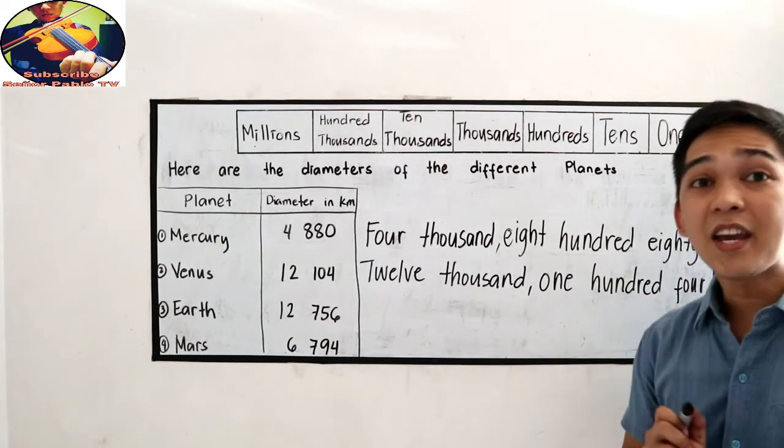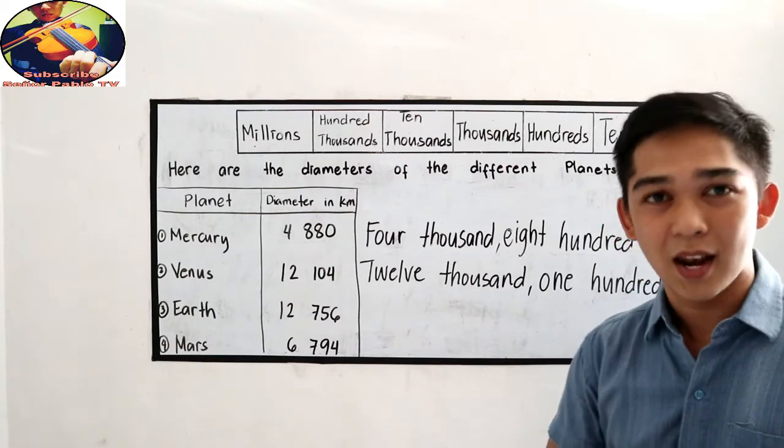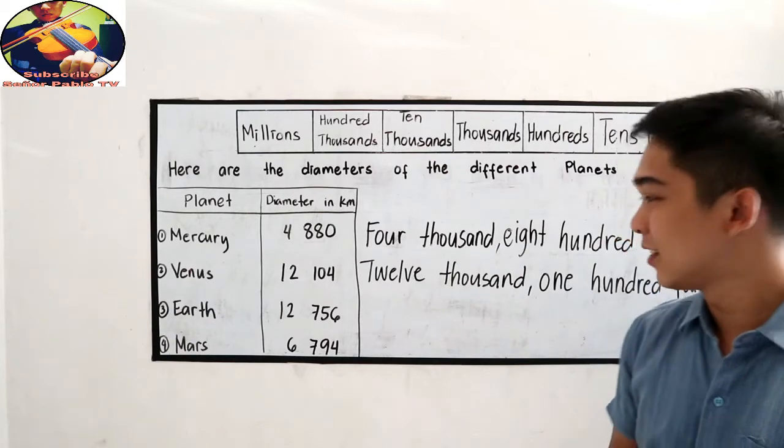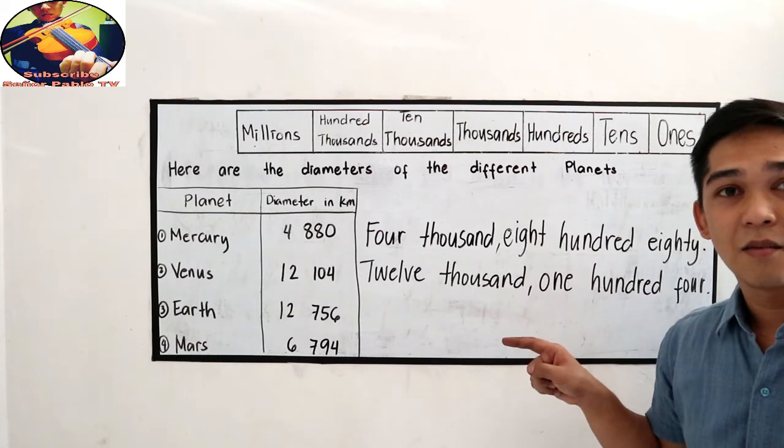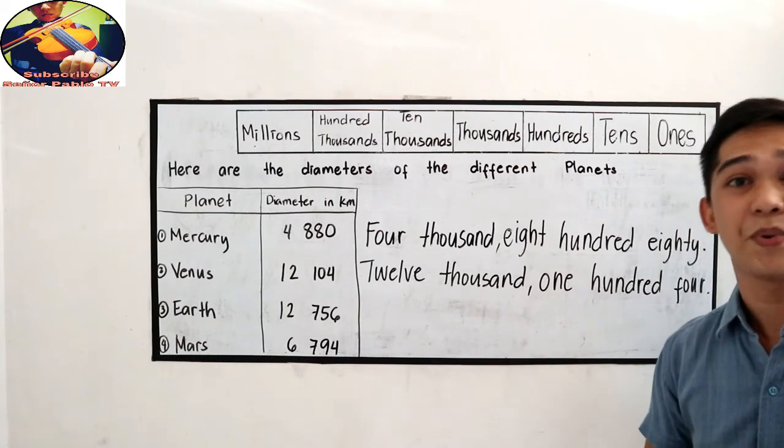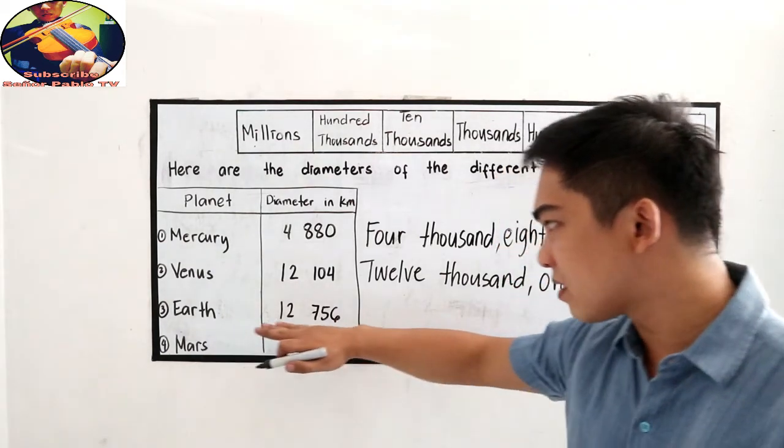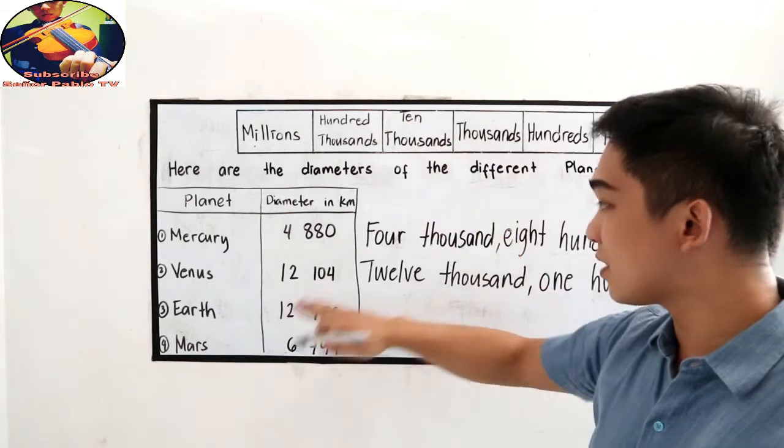In writing numbers, it is very important to check your spelling, because wrong spelling means wrong. And of course, don't forget our comma, because it indicates our period. The Earth's diameter is in the ten thousands place.